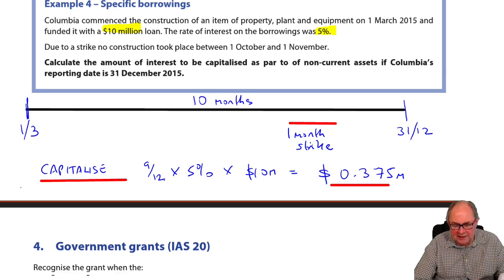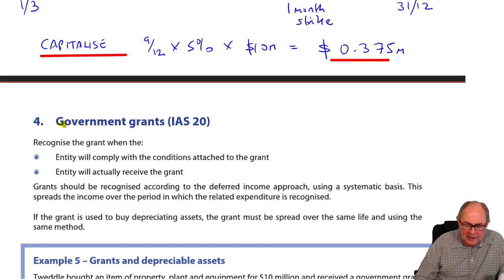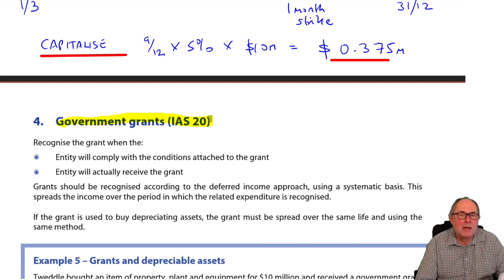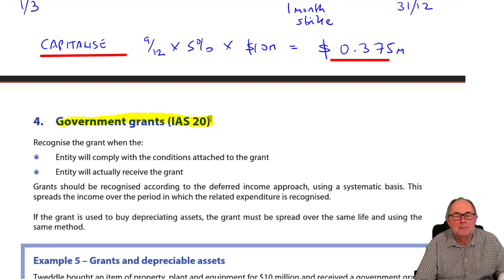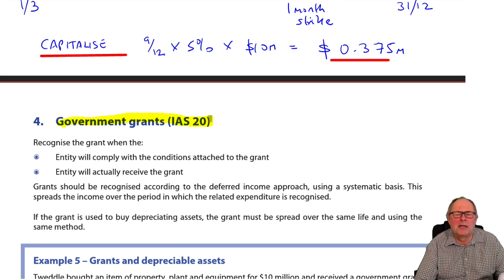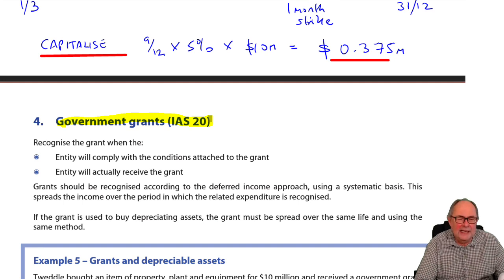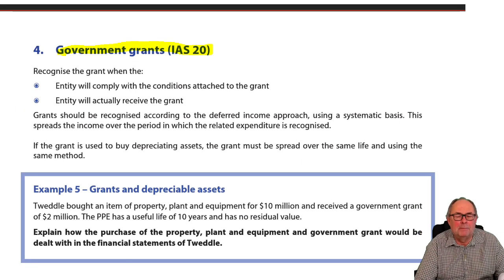The next revision standard to recap is grants. You could get a grant from the government, from some central agency like the European Union, from a local authority, or sometimes from suppliers to help you set up a new production line. Either way, you need to match the grant against the related income. It would be wrong to put the grant immediately into the profit and loss. It needs to go into the profit and loss applying the matching or accruals concept.